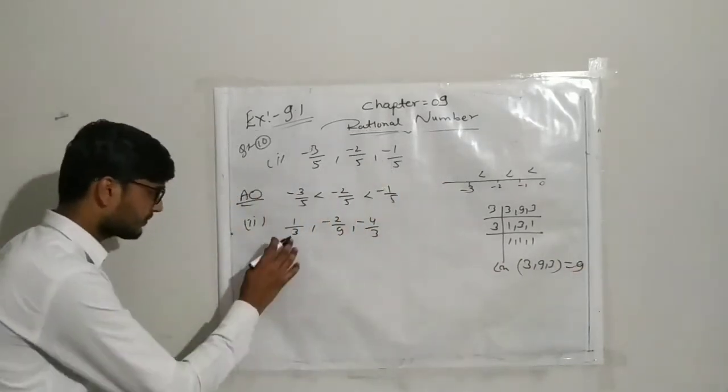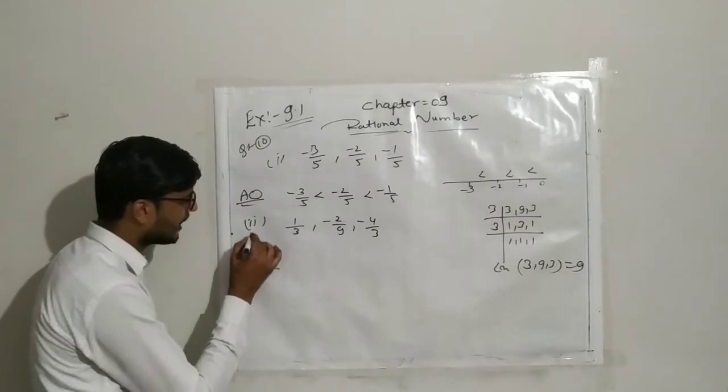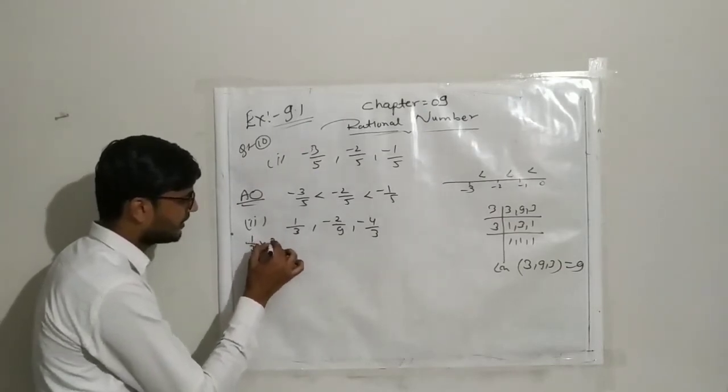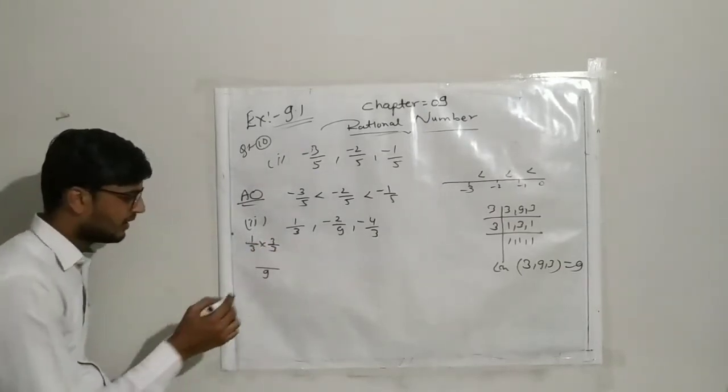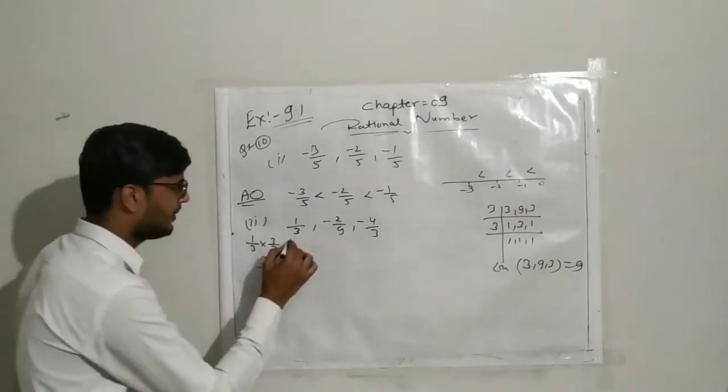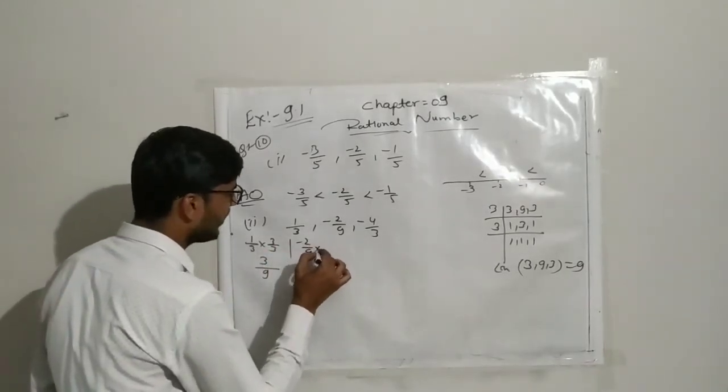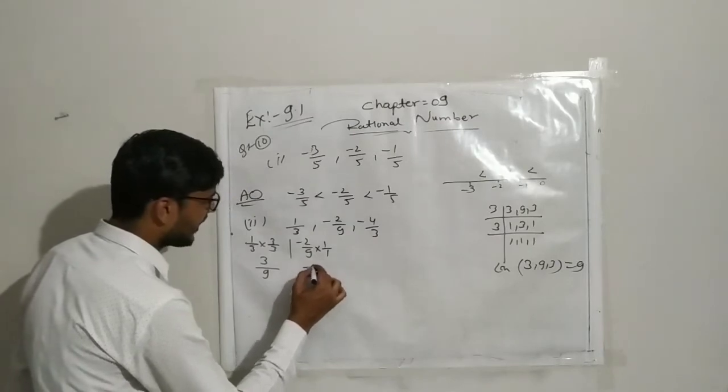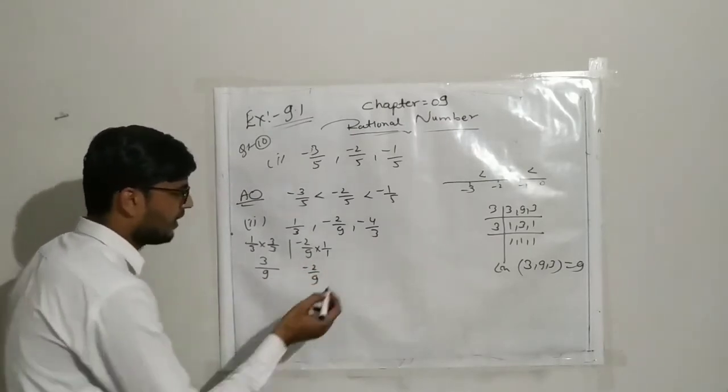First, to convert 1 upon 3 into denominator 9, you have to multiply by 3 upon 3. So it will become 3 upon 9. Similarly minus 2 upon 9, this is already in that form, multiply by 1 upon 1. So it becomes minus 2 upon 9.